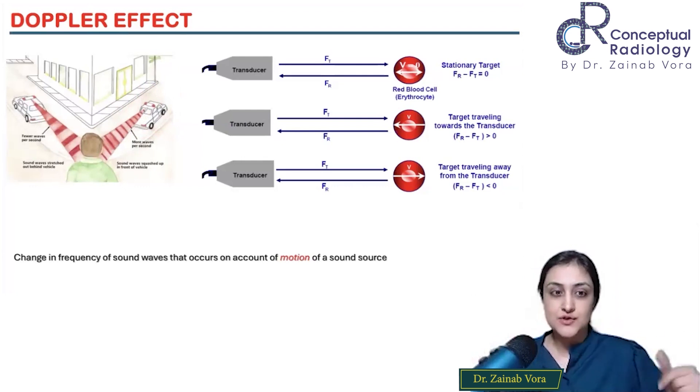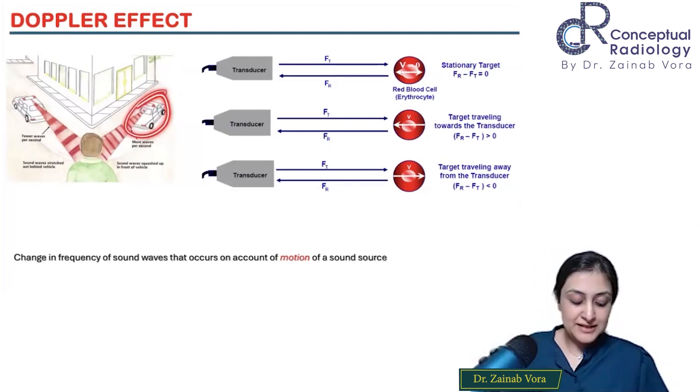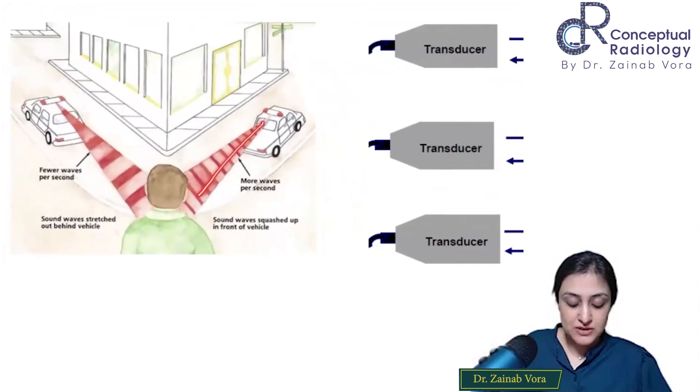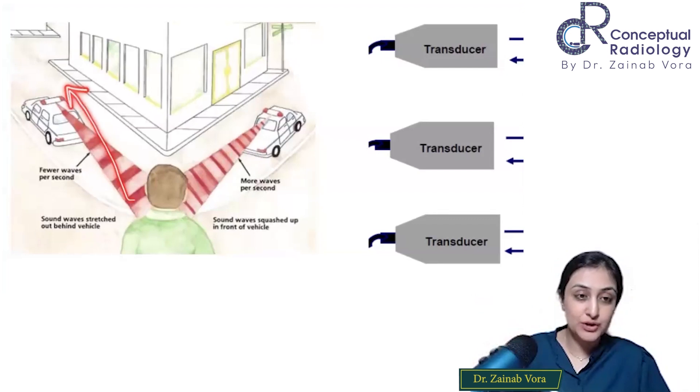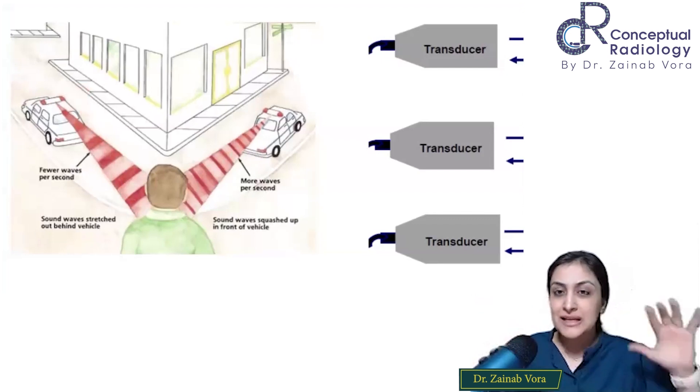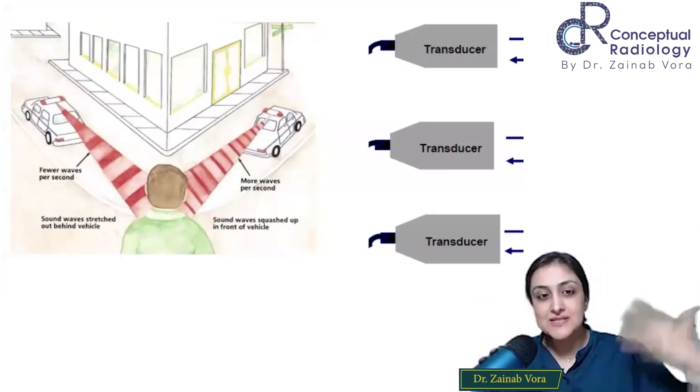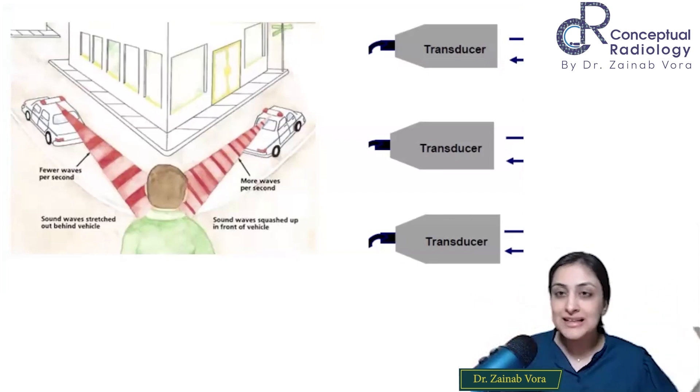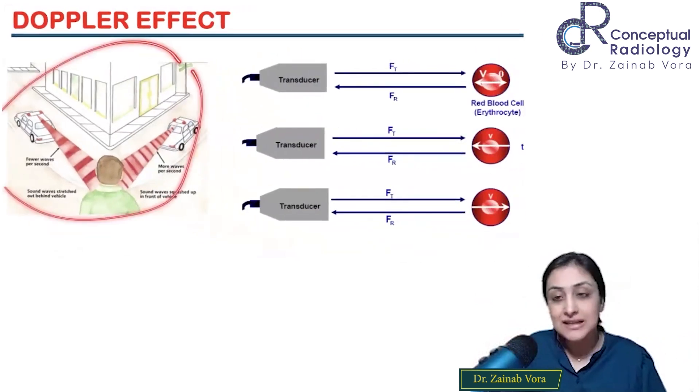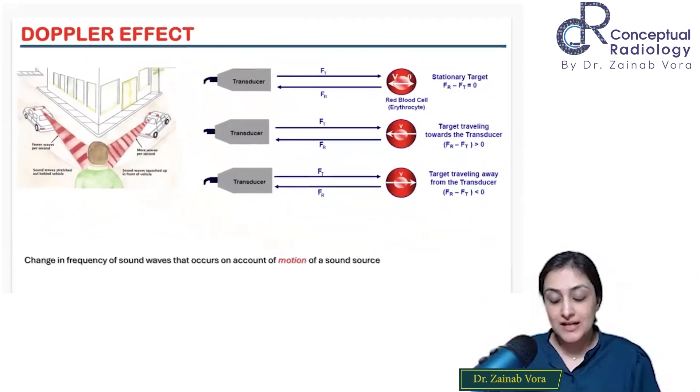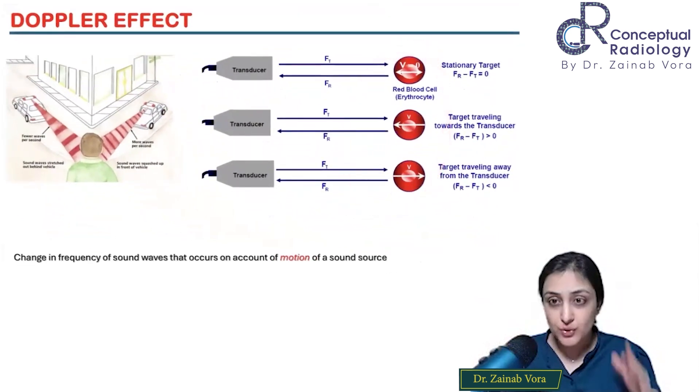Take this example of an ambulance. When the ambulance is coming towards me, the stationary observer, I hear a higher frequency - the ambulance seems louder. But as the ambulance or police car goes away, the frequency decreases. I hear the sound getting lighter. This is the Doppler effect we know as laymen.